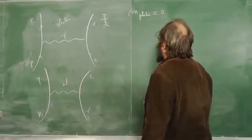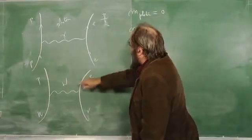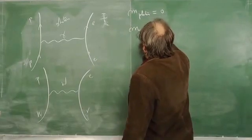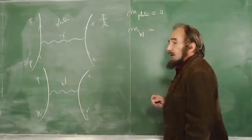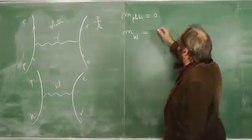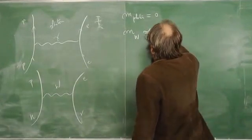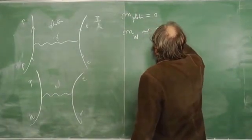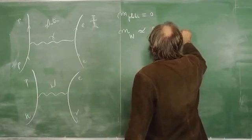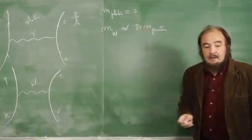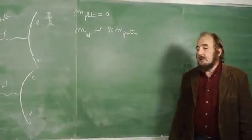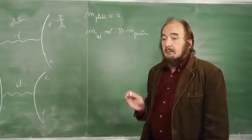here with a very short-range interaction. And this short-range interaction is characterized by the fact that the mass of the W is of the order of 80 times the mass of the proton. That's a very large mass. It took until the 1980s to discover the W at CERN.